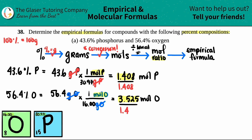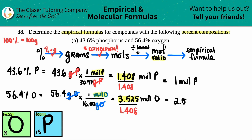1.408 divided by 1.408 gives me one mole of phosphorus. And 3.525 divided by 1.408 gives me 2.5 moles of oxygen.